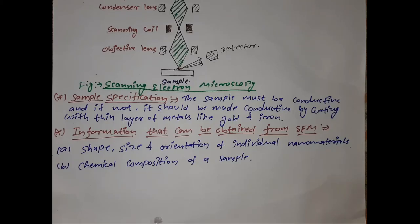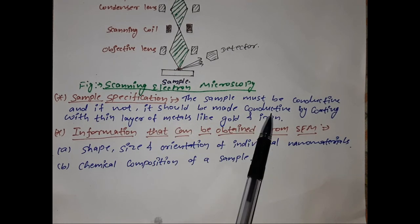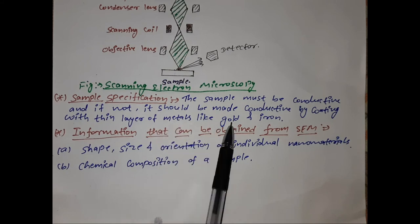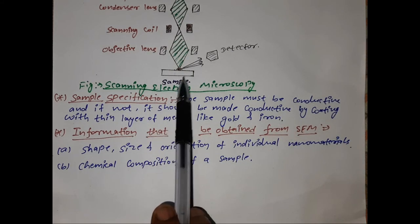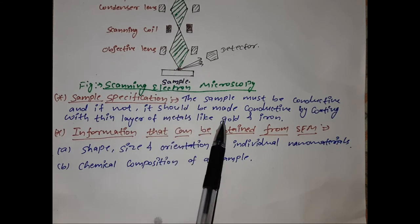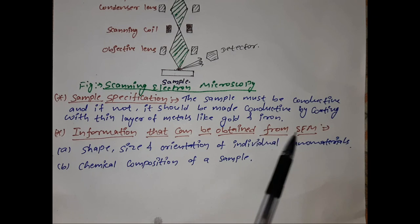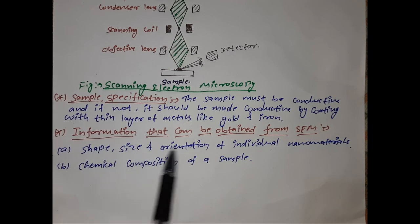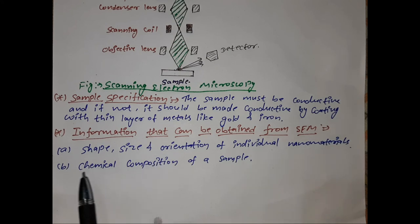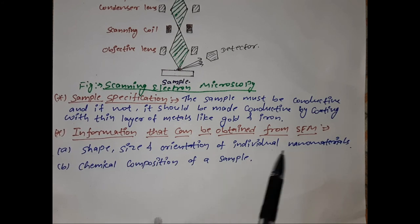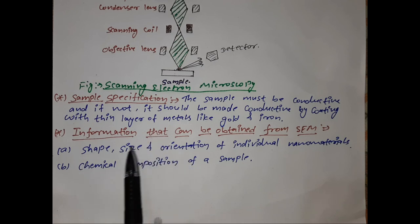Regarding sample requirements, the sample must be conductive. If it is not conductive, it must be made conductive by coating with a thin layer of metals like gold or iron. The information obtainable from SEM includes the shape, size, and orientation of individual nanomaterials, as well as the chemical composition of a sample. Thank you for watching.